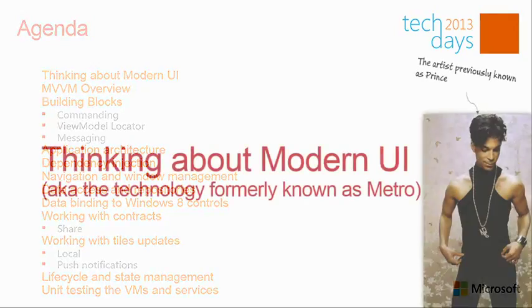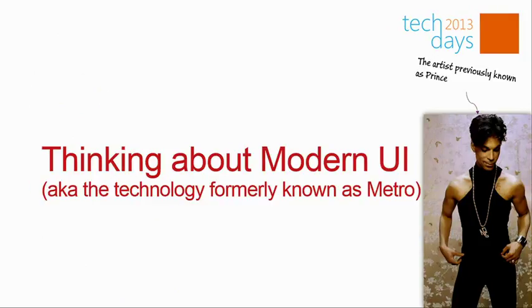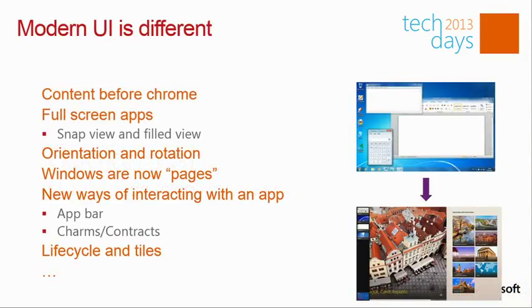Let's start by making the link between Modern UI and MVVM. Modern UI — previously known as Metro, though I'm not supposed to say that — is the new design language Microsoft is introducing for all their applications. If you think about Modern UI, there are quite a number of concepts we didn't have to think about when building regular WPF or Silverlight applications. Windows 8 applications are all about content, not chrome — they're full screen, and you can put them in a split view or snap view.